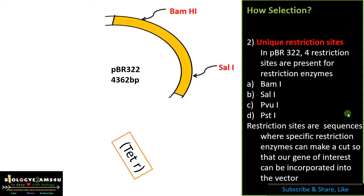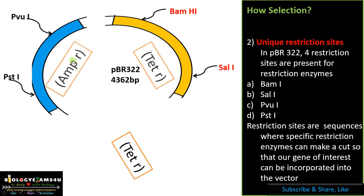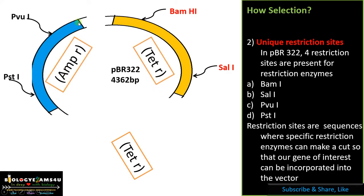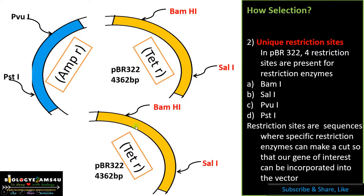Now let us see how this helps in selection. This is the PBR322 vector with the ampicillin resistance region and the tetracycline resistance region. There are restriction sites within these selectable marker regions. Suppose we are using the BamHI restriction enzyme, which is within the tetracycline gene sequence, to insert our gene of interest.